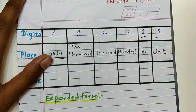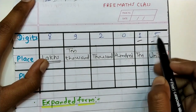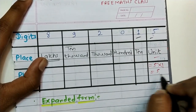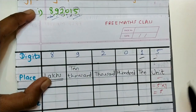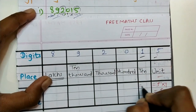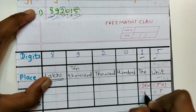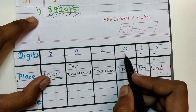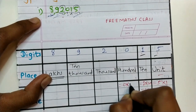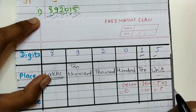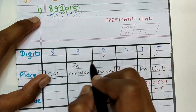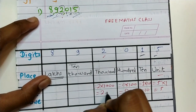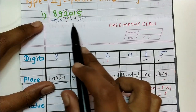Now we create place values. Place value of five equals five into one, which is equal to five. Place value of one equals one into ten, which is equal to ten. Place value of zero equals zero into hundred — place value of zero is always zero. Place value of two equals two into one thousand, which is equal to two thousand.